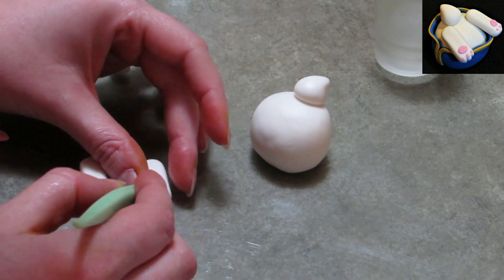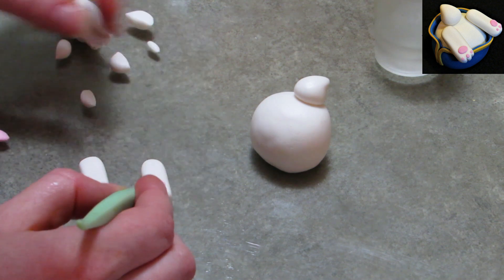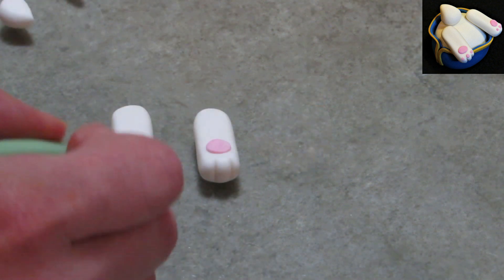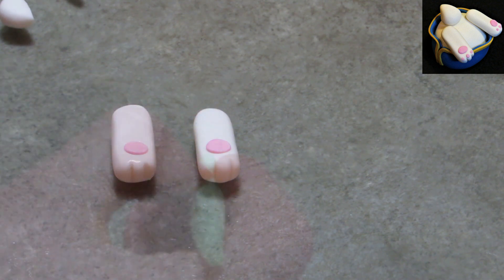Little balls of pink. Spread it out to make it more ovally for the little pads on his feet. See, there's one. There's the other. And then you start adding little toe dots.